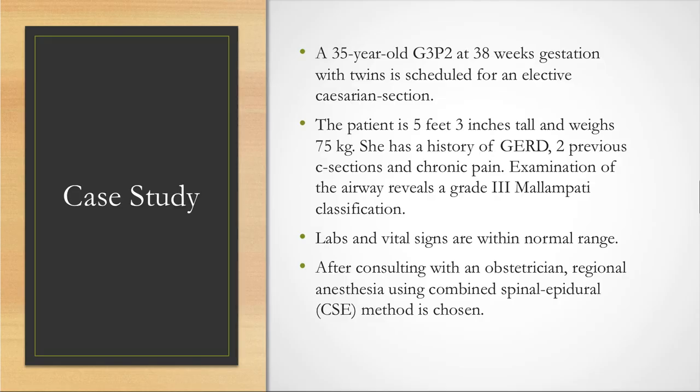A 35-year-old Gravida 3 Para 2 at 38 weeks gestation with twins is scheduled for an elective cesarean section. This patient is 5 feet 3 inches tall and weighs 75 kilos. She has a history of GERD, two previous C-sections, and chronic pain. On examination of her airway, it reveals a grade 3 Mallampati classification. Her labs and vital signs are within normal range.